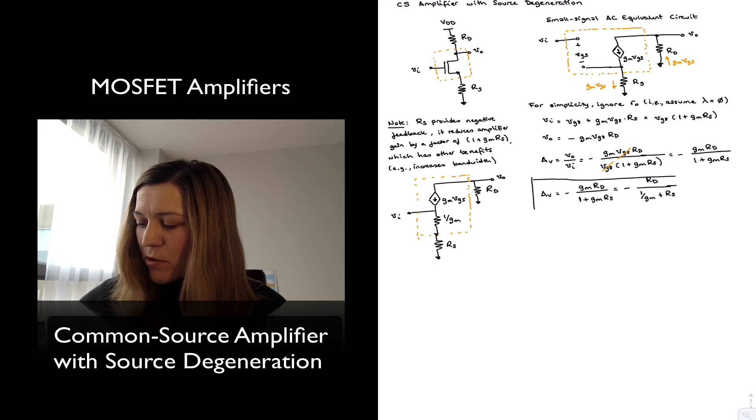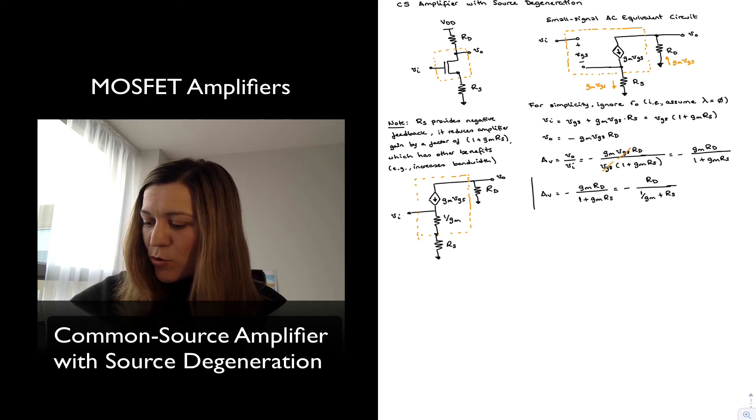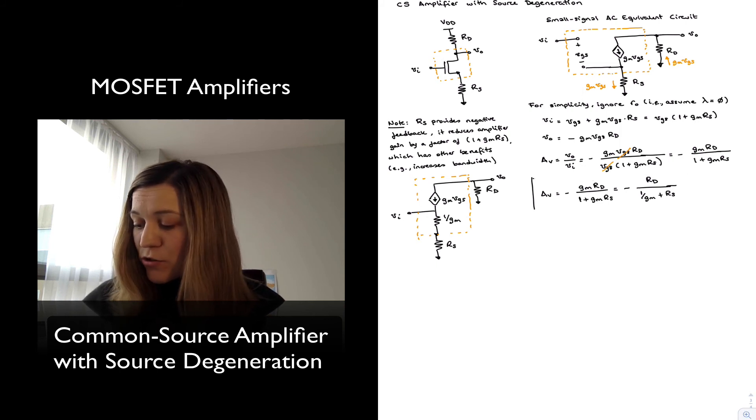Normally, when you're talking about MOSFETs, it's more common to encounter the first expression, minus GM RD divided by 1 plus GM RS.